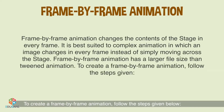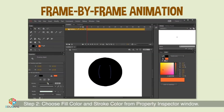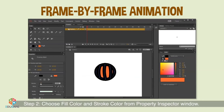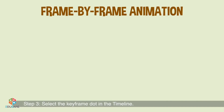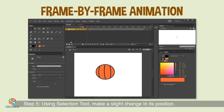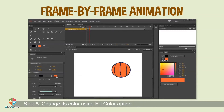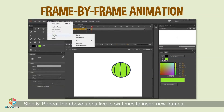To create a frame-by-frame animation, follow the steps given. Step 1: Draw a ball. Step 2: Choose fill color and stroke color from the Property Inspector window. Step 3: Select the keyframe dot in the timeline — the animation will begin from this particular frame. Step 4: Select Insert, Timeline, Keyframe. Step 5: Using the Selection tool, make a slight change in its position and change its color using the Fill Color option.